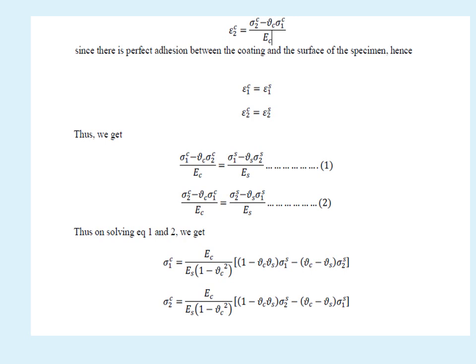Solving equations 1 and 2, we get the relation for the coating stress σ₁c along the horizontal direction is given by Ec/Es·1/(1-νc²)·[(1-νc)·σ₂s - (νc-νs)·σ₁s]. These are the equations which give the coating stress along the σ₁ direction and along σ₂ direction.